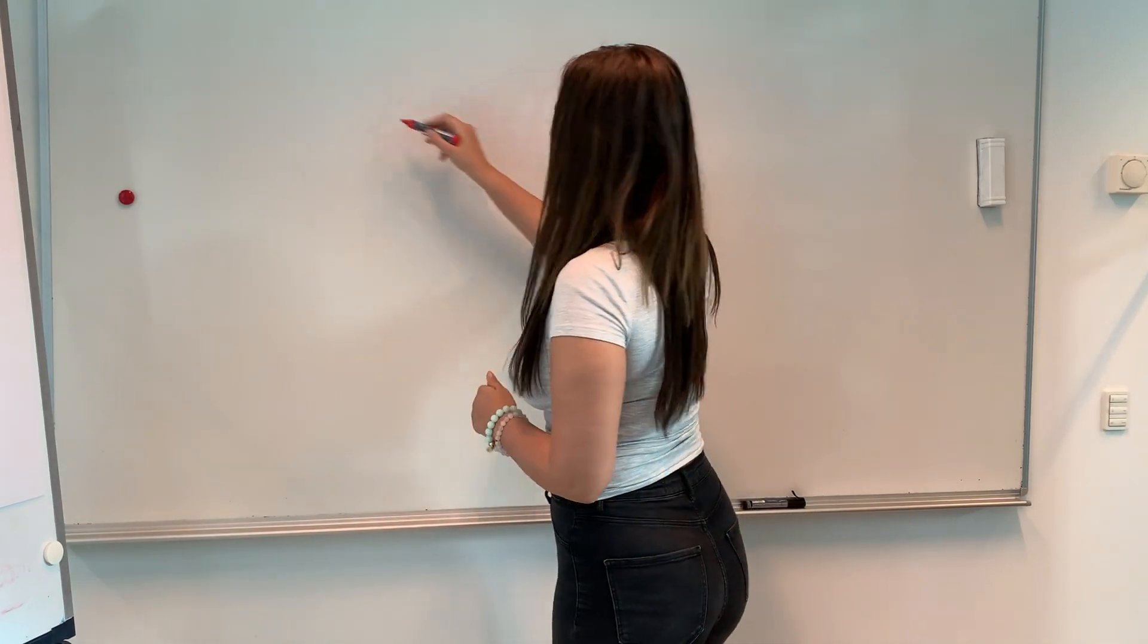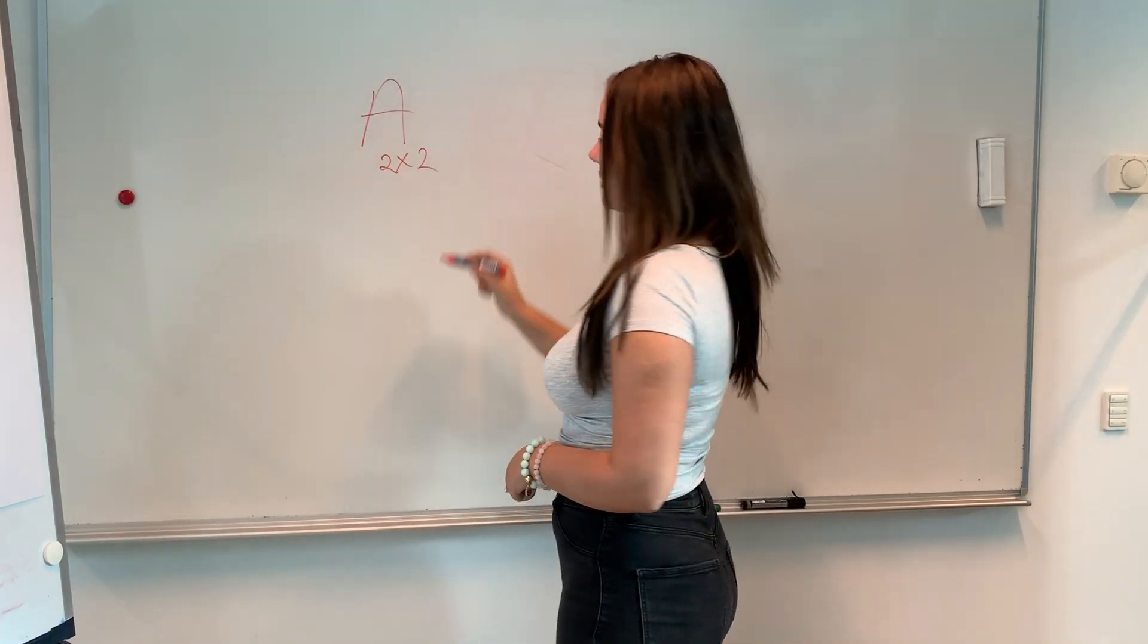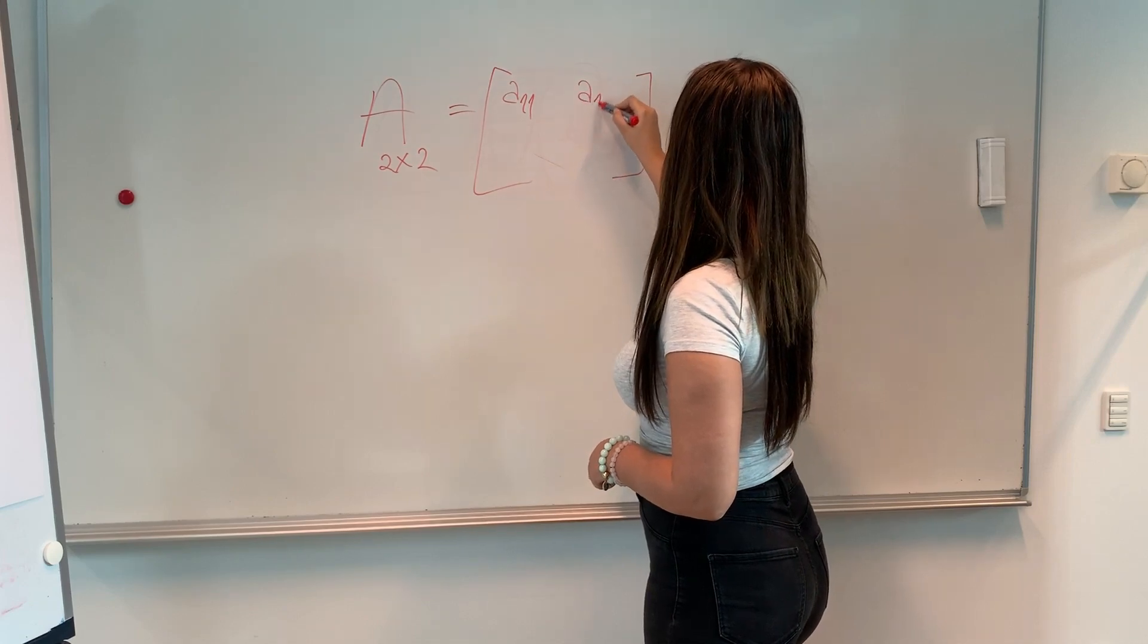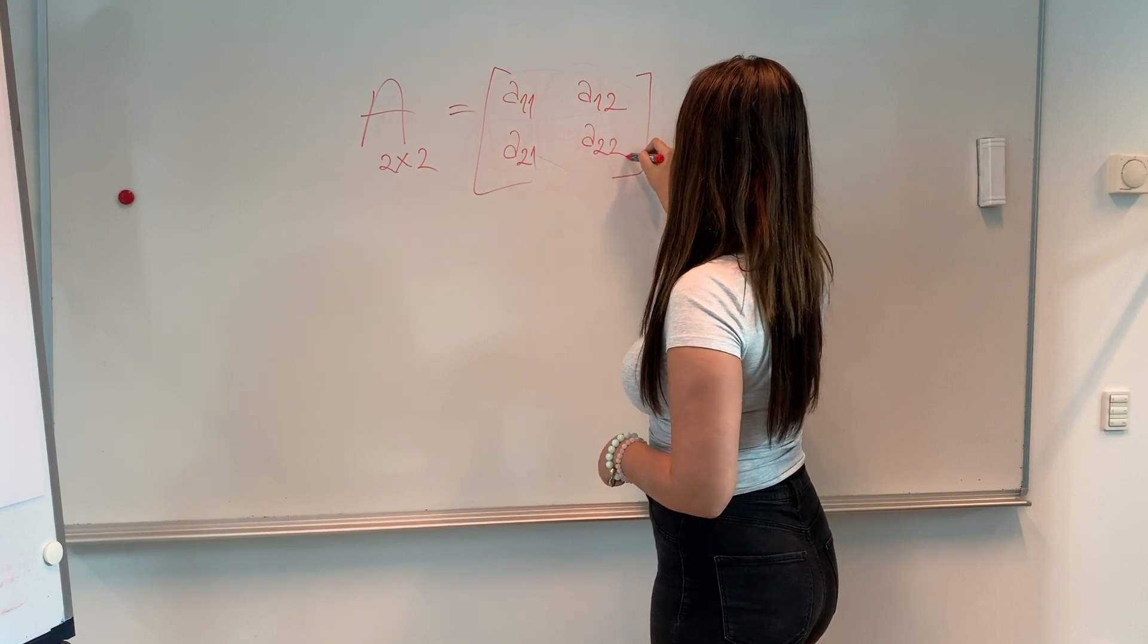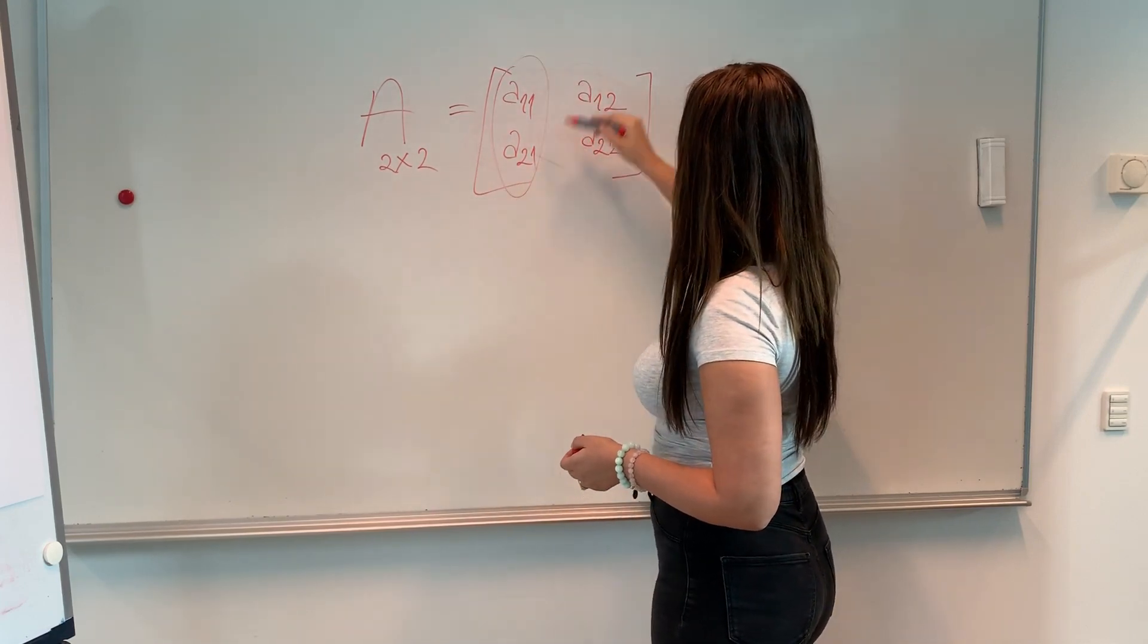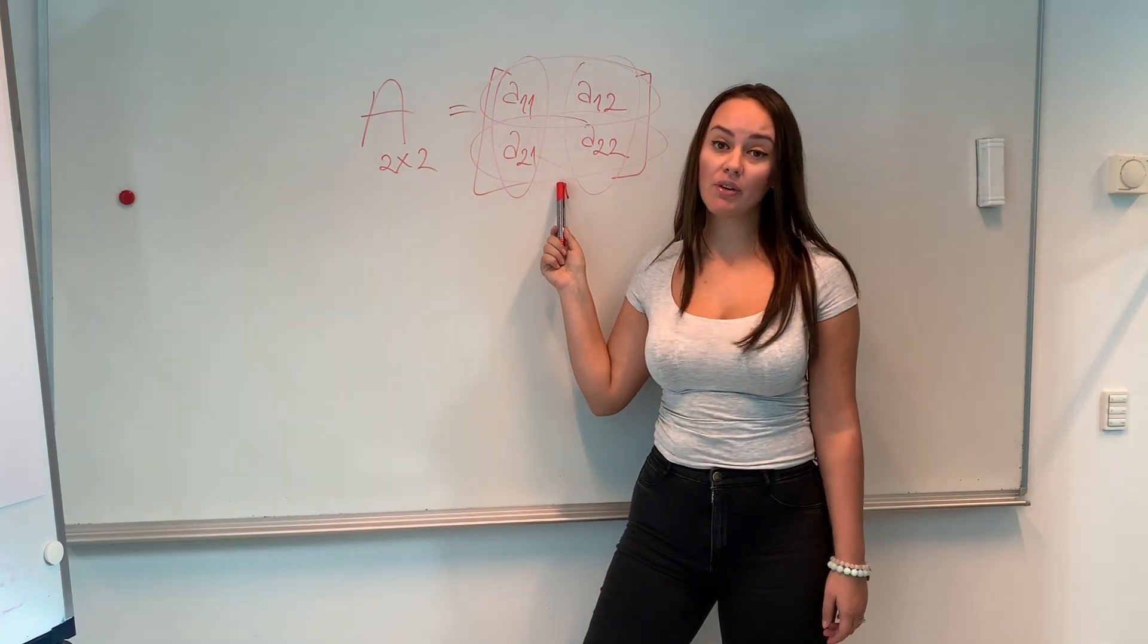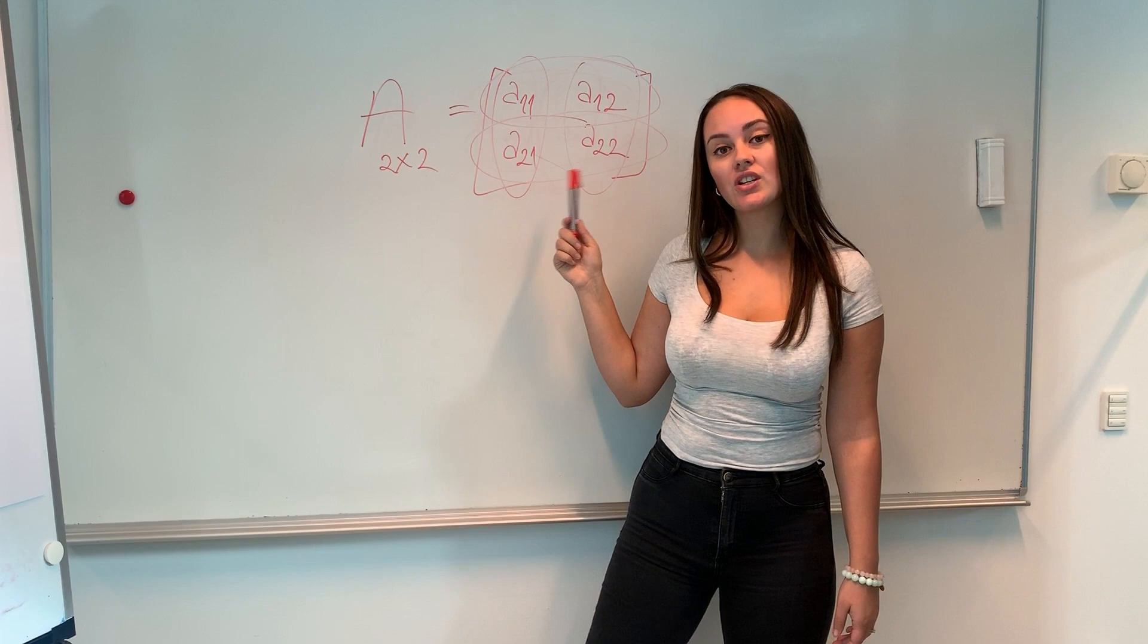So let's say we have a matrix called A and it's going to be a two by two matrix. And it's going to look like this. We have the first element, the second, the third, and the fourth. And then this is the first column, this is the second column, and then we have the rows. And this is going to be very important for when we're going to move forward with matrix multiplication and addition.